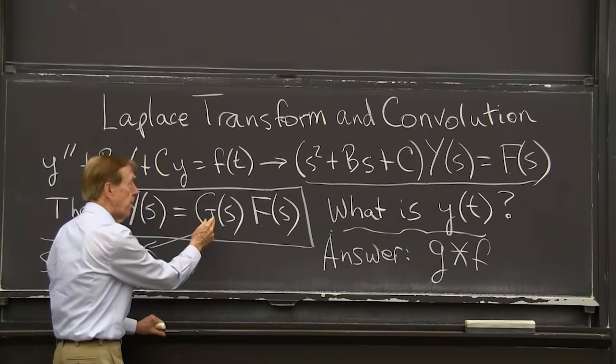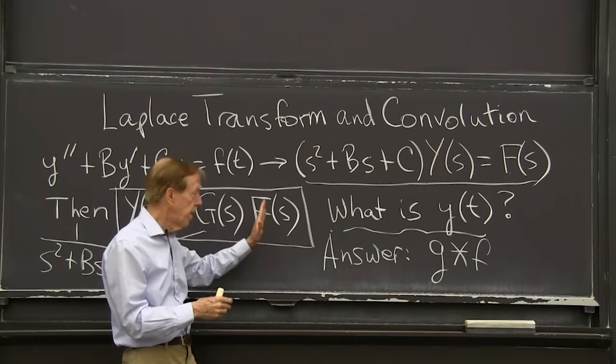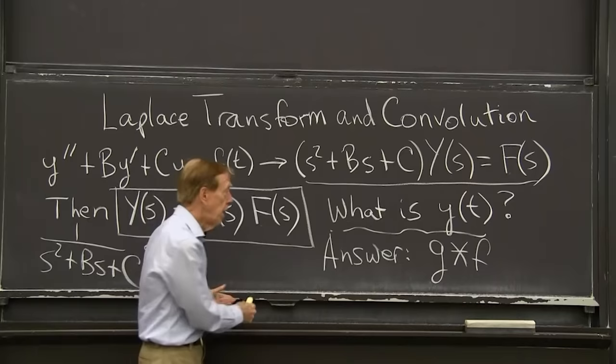So this is a general question. If I have two functions multiplied together, then I want the inverse transform. Then I take the separate inverse transforms, little g, little f, and I convolve them. I do convolution.